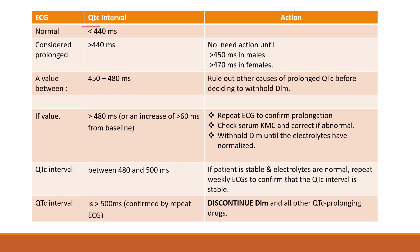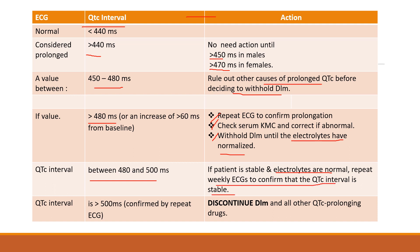This table shows the QTc interval on ECG and the action to be taken when a patient is on Delamanid. Normal QTc is less than 440 ms. Prolongation is considered above 440 ms, but no action is needed until it exceeds 450 ms in males and 470 ms in females. If QTc is between 450 and 480 ms, rule out other causes before deciding to withhold Delamanid. If QTc is more than 480 ms, repeat ECG, check electrolytes, and withhold Delamanid until electrolytes normalize. If electrolytes are normal and QTc is between 480 and 500 ms with a stable patient, repeat weekly ECG to confirm stability. If QTc exceeds 500 ms, discontinue Delamanid and all other QTc-prolonging drugs.